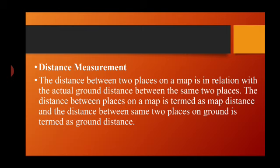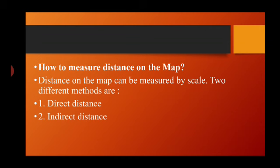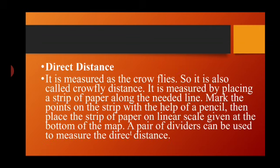There are two ways to measure distance: first is direct distance, and second is indirect distance. Direct distance is measured with the help of a crow line — in other words, it is also known as crow fly distance. It is measured by placing a strip of paper along the needed line and marking the points with a pencil.